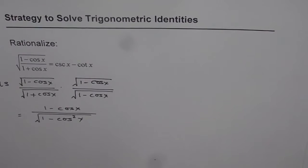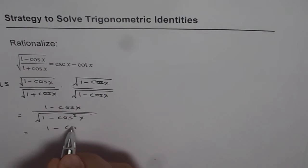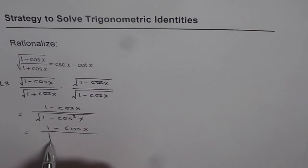So in one step, we have eliminated the square root, and that helps to simplify. We have 1 minus cos x in the numerator, and the denominator is 1 minus cos squared x, which is sine squared x.